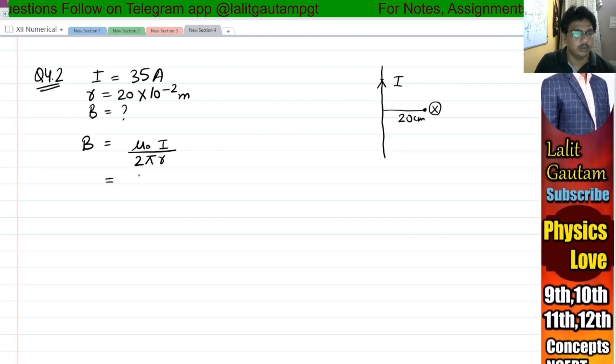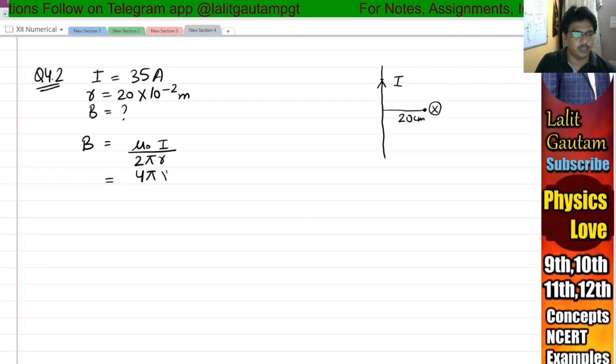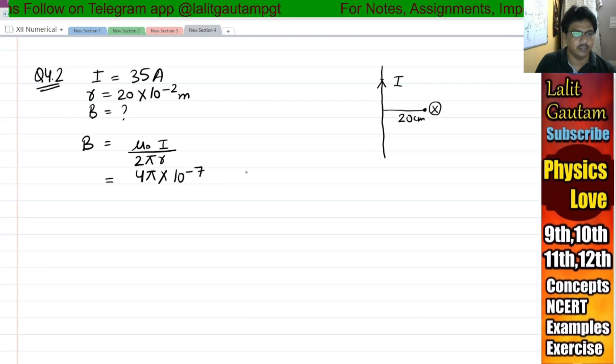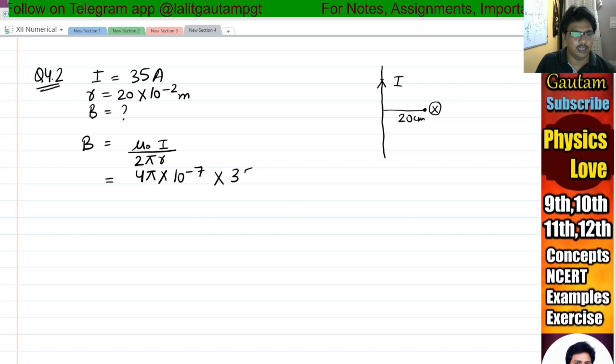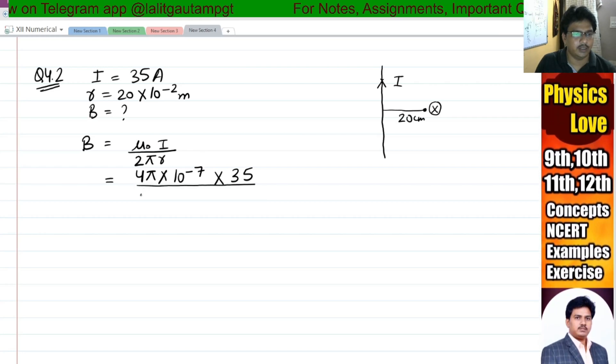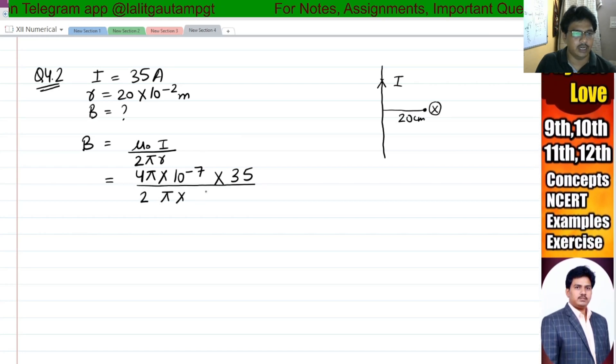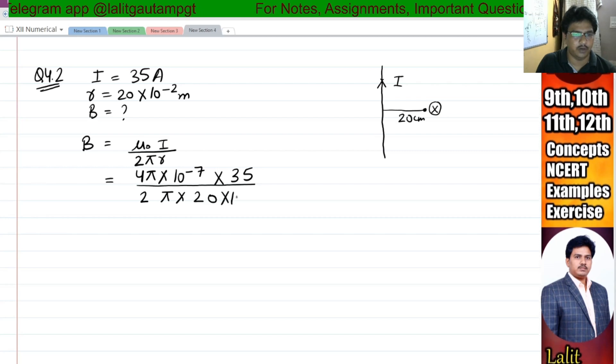We put the values: mu naught is 4 pi into 10 to the power minus 7. The value of current is 35 ampere divided by 2 pi and r is 20 into 10 to the power minus 2.